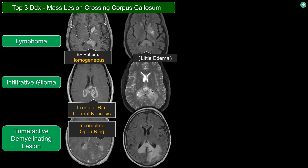CNS lymphoma tends to present with a relatively small amount of surrounding edema compared to other lesions like abscess or metastasis, which tend to present with quite a bit of edema.